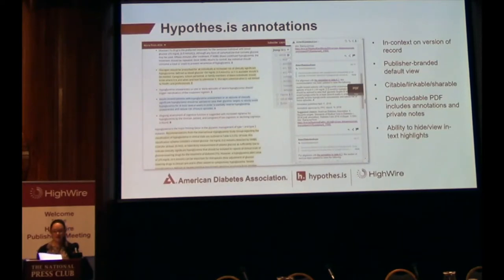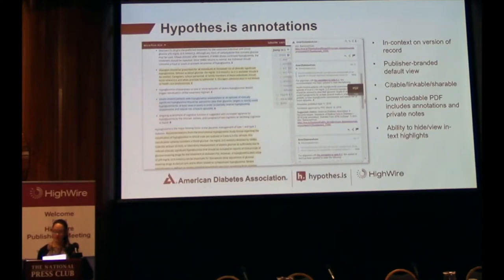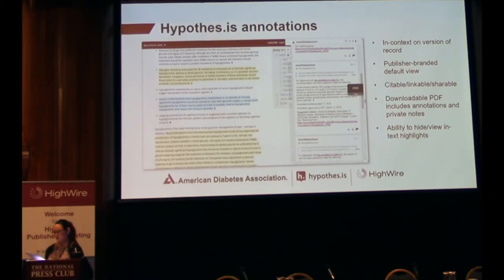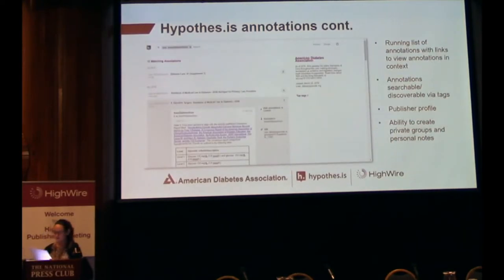Each ADA annotation contains the official update, the rationale for making the change, any corresponding references, the Professional Practice Committee approval date, a publication date, a suggested citation, and options for sharing. There's also a button for downloading a PDF containing the annotations, and users can create private notes. The drop-down box at the top of the annotation pane links out to a running list of ADA annotations.